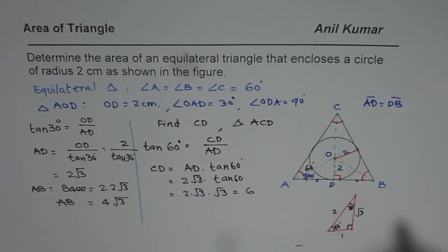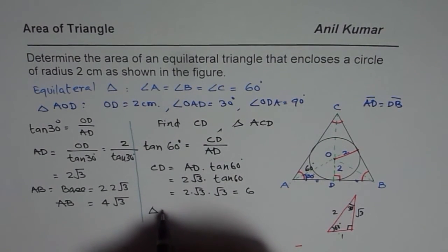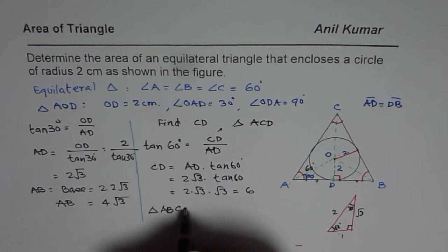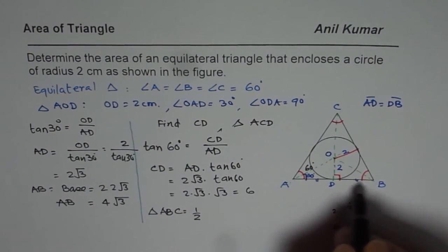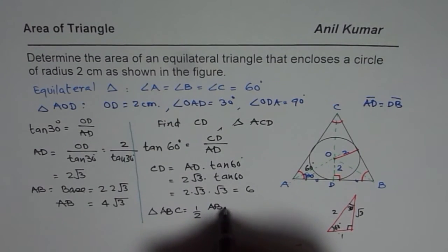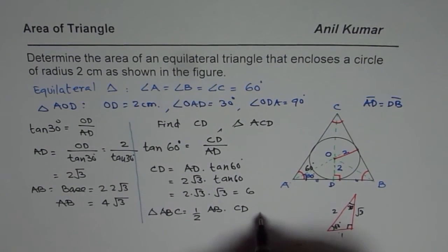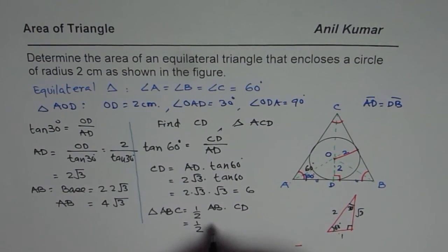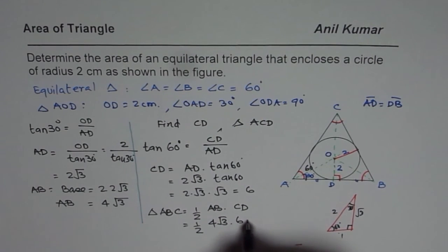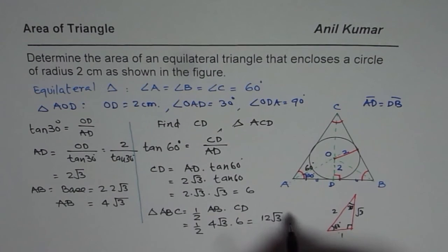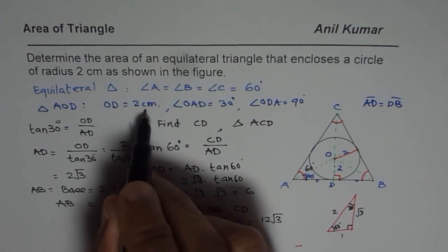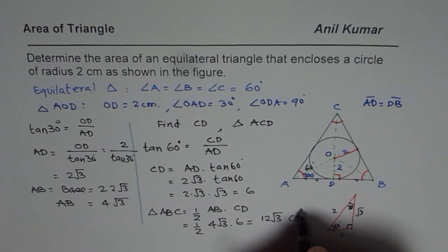Now we can find the area of triangle ABC. Area = ½ × base × height = ½ × AB × CD = ½ × 4√3 × 6 = 12√3. The units are centimetres squared.